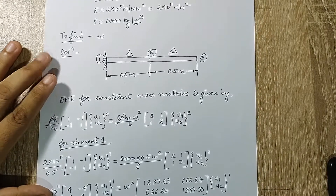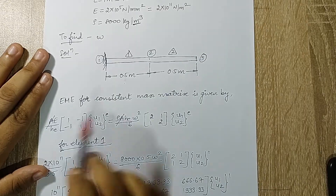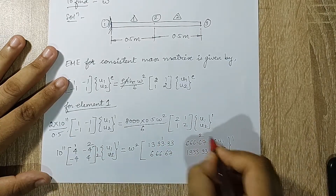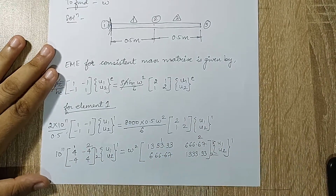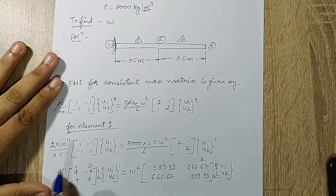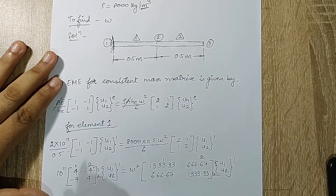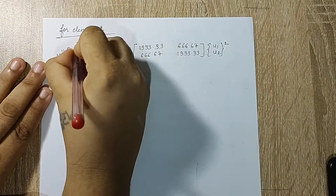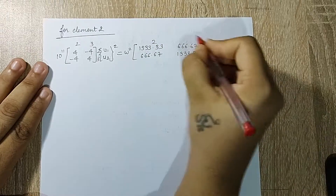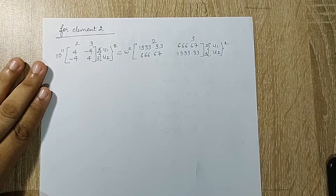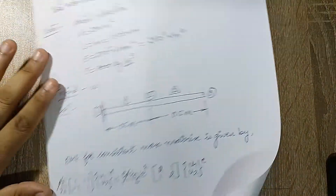Using the same assembly concept as the direct application of EME: element 1 is between nodes 1–2, and element 2 is between nodes 2–3. Since both elements have the same dimensions, their values are identical. We write element 2's equation with node connectivity 2–3.